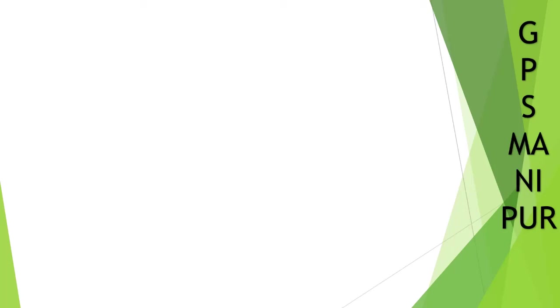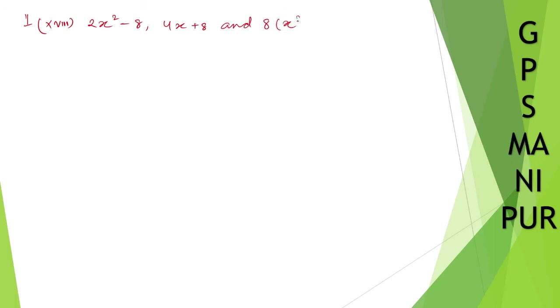We are doing exercise 2.4, question number 1, problem number 18. We have three polynomials: 2x squared minus 8, 4x plus 8, and 8x squared plus 4x plus 4.